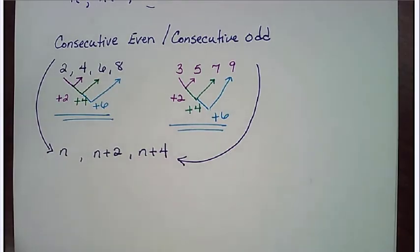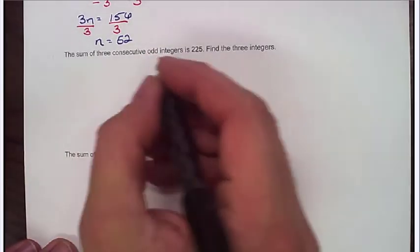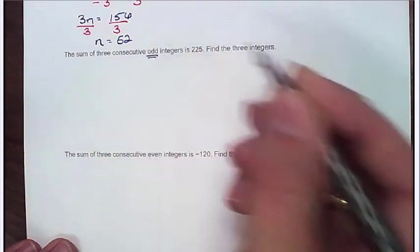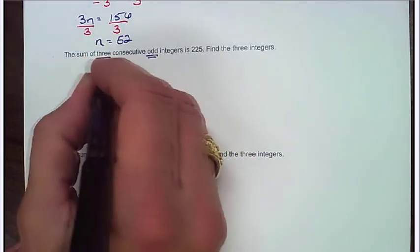So let's work a problem. Okay, so here's my problem. We want the sum of three consecutive odd integers. Well, we want odd, so we know we want that n plus 2, n plus 4. And we want three of them.